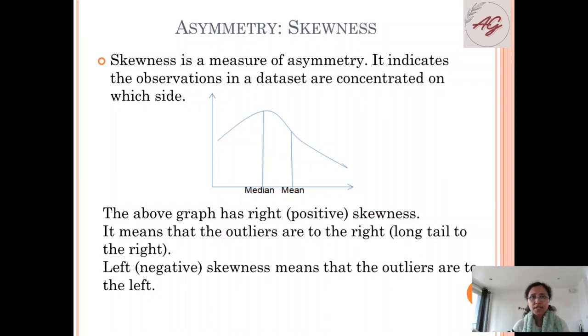Now we will understand about asymmetry. In asymmetry there is a measure called skewness. What is skewness? Skewness is a measure of asymmetry and it indicates which side the observations in a data set are concentrated on. This is our graph - these are all the data set distributed.